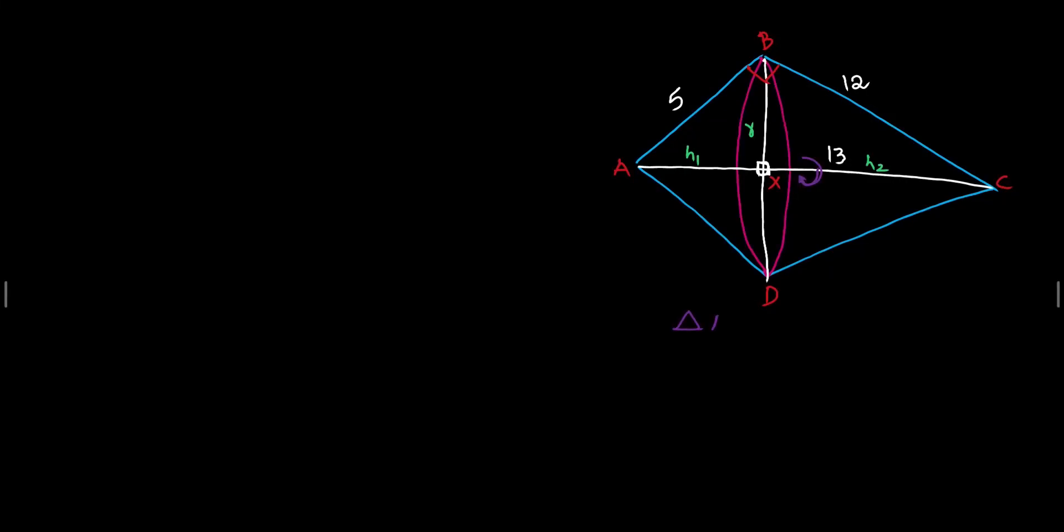Area of triangle ABC can be given as half into base into height that is equals to half into 5 into 12, but that is also equals to half into 13 into R because area is equals to half into base into height. If I take the base as AC, then my height will be nothing but for the triangle R only. So, simplifying this, half and half will cancel. We get R equals to 60 by 13. So, we are able to get the R value.